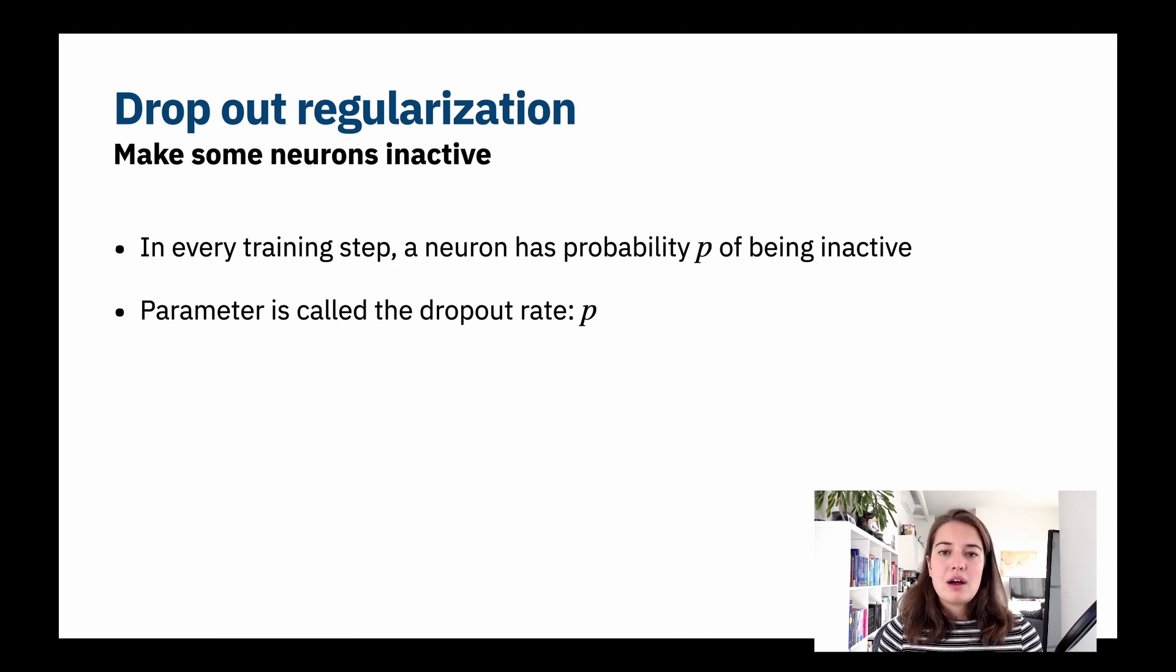Here we're taking a straightforward approach and say in every training step, every neuron has a possibility p of being inactive. We call this the dropout rate p. So if every neuron has 0.25 chances of being inactive, you might have one-fourth of your neurons being inactive in your network.